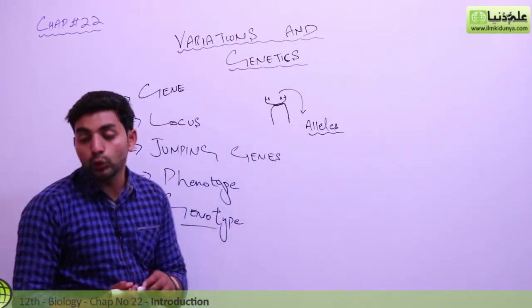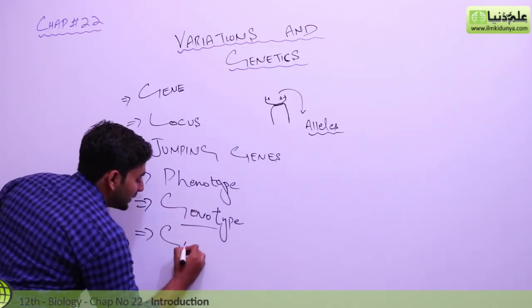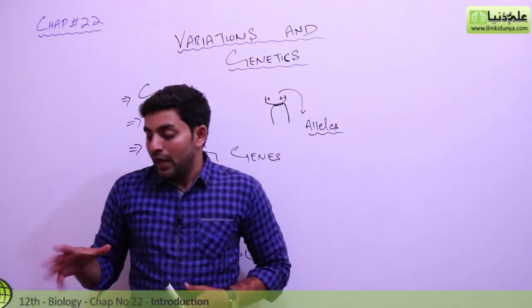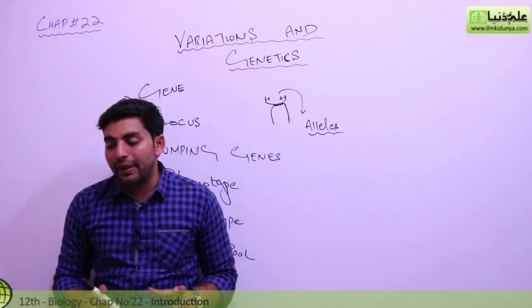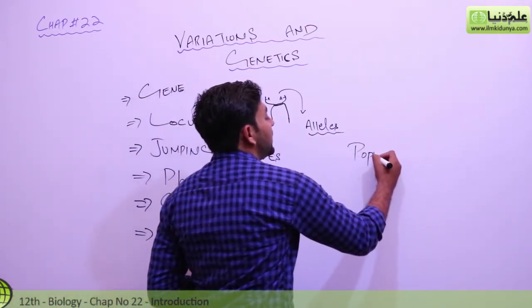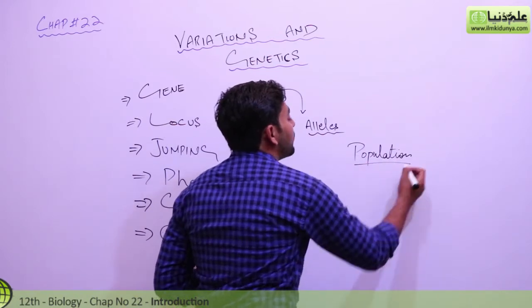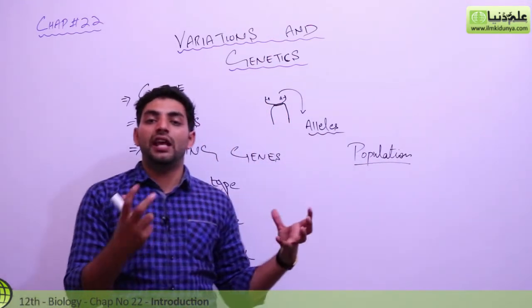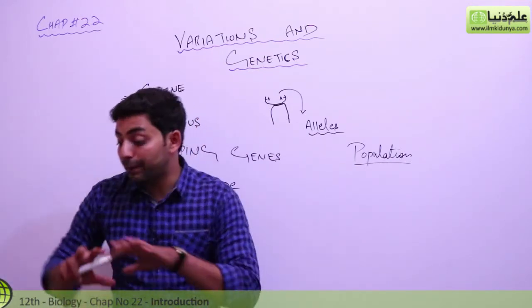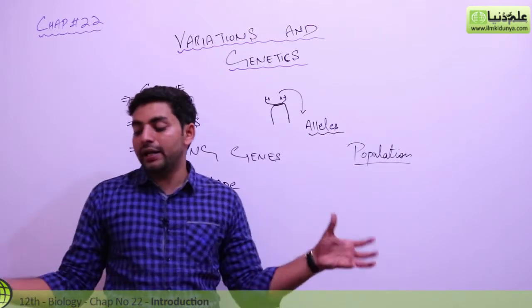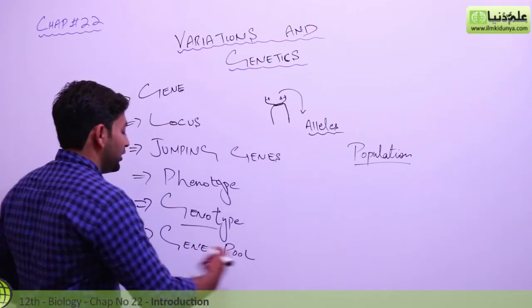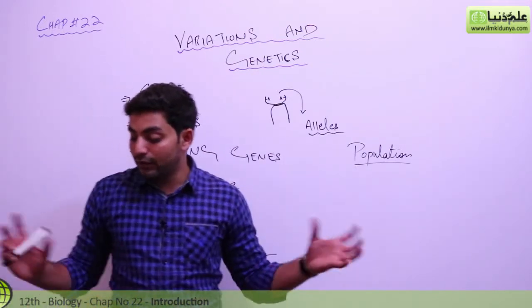We have a definition of gene pool. What is gene pool? The same individuals of the same species living in the same space and time, we call them a population. So, a population's genetic makeup, we give collectively the name of gene pool. This is basically the genetic makeup of the population.